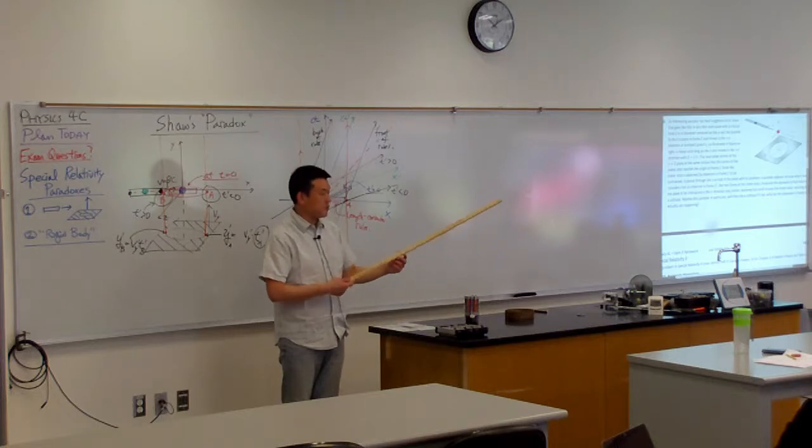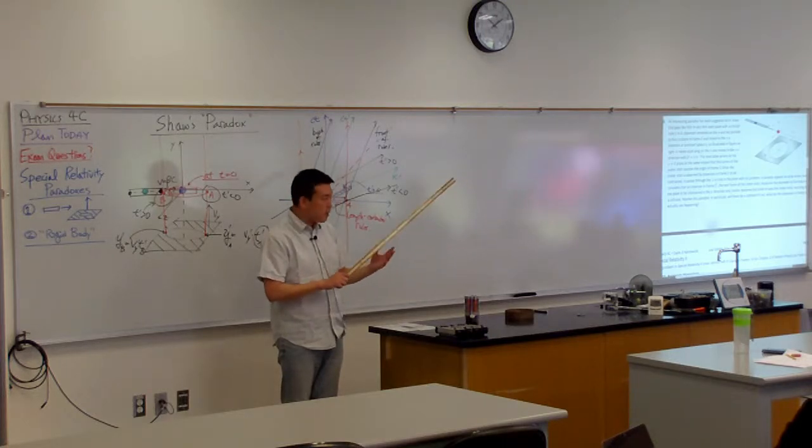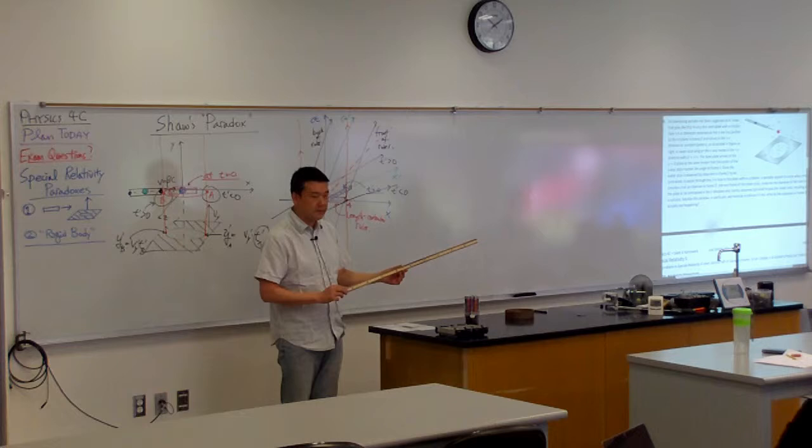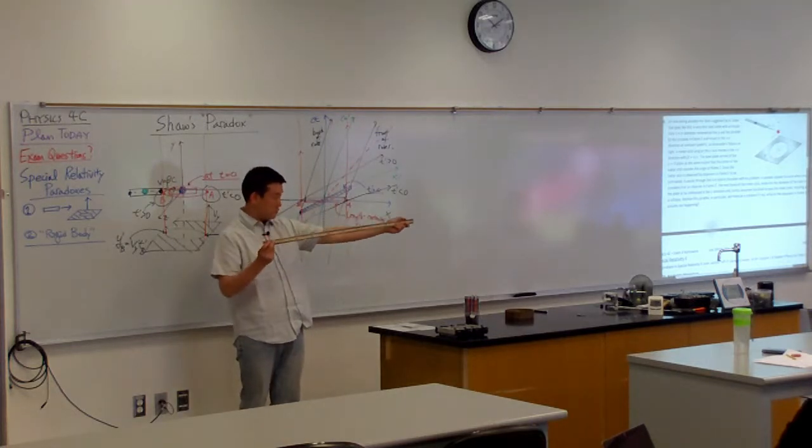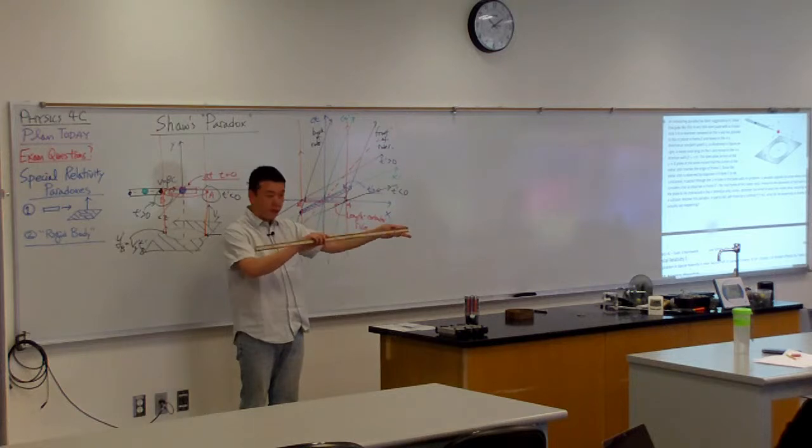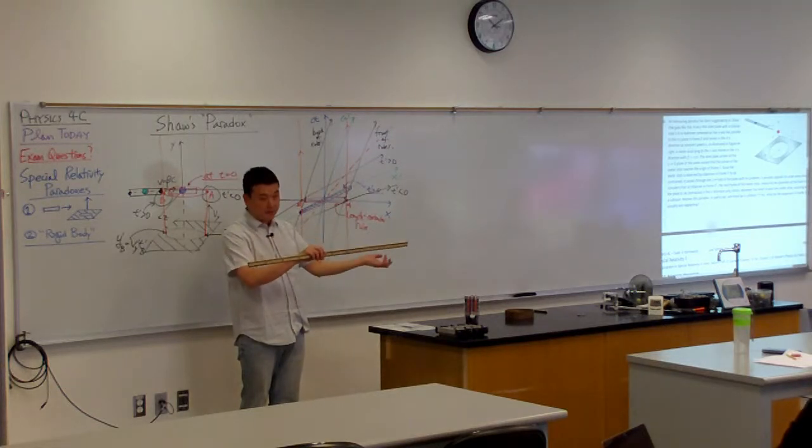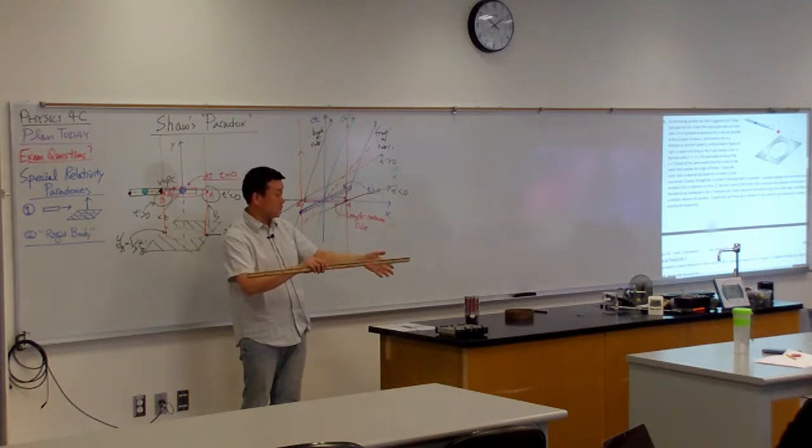Yeah, it's the assumption of rigid body. Such a thing as a perfectly rigid body does not exist in special relativity. So question of, what keeps it rigid? The intermolecular forces, electromagnetic force. Those have a propagation speed limit of speed of light.